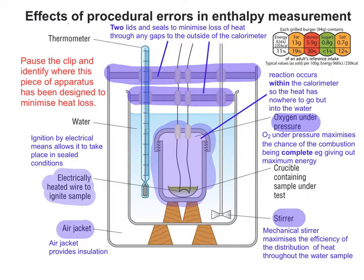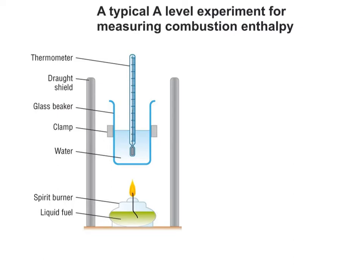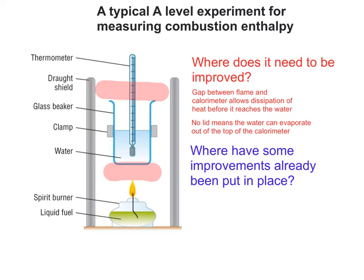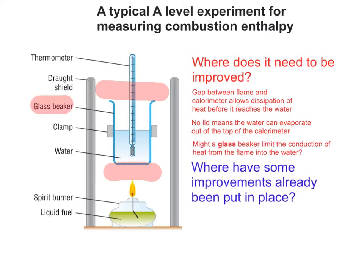So let's now look at a typical A-level style setup. Why not pause the clip and see if you can work out where procedures have been put in place to minimise heat loss, and where it also needs to be improved. The two places to look at are the space between the flame and the calorimeter, and also the fact that there's no lid. Additionally, might there be a problem with using a glass beaker? A glass beaker is made of a non-conducting substance, so it's going to be difficult for the heat to cross the boundary into the water.